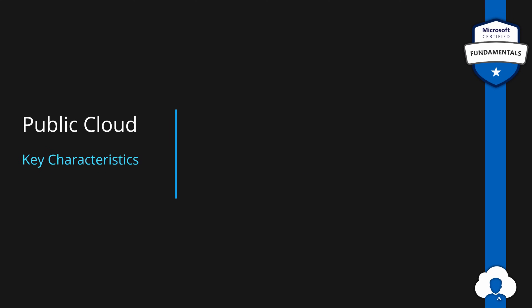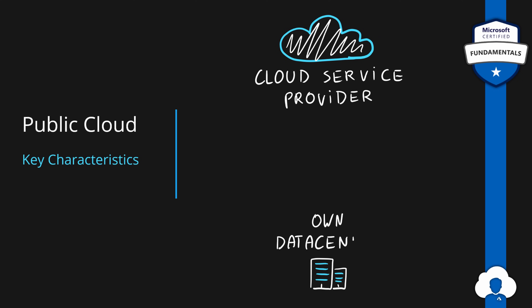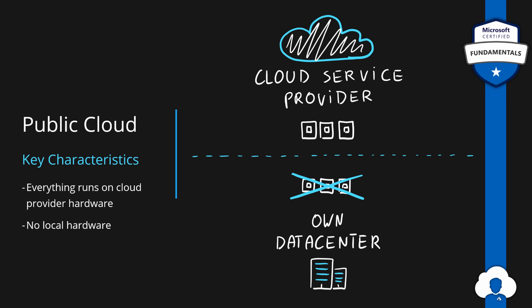Let me start with the public cloud. In order to understand the public cloud we need to make a very clear separation of where we are deploying our services — either to the cloud service provider or inside our own data center. With public cloud, all our resources are hosted in a public cloud, meaning we don't own any hardware. One thing to note is that in public cloud some services share hardware with other customers, which is usually solved by picking the right pricing tier. Be aware of this if you have security compliance policies in place.